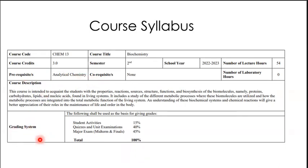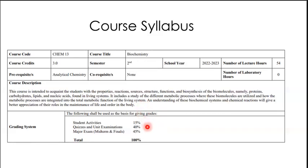For the grading system — this is subject to approval — student activities is only 15%, quizzes and unit examinations 40%, and major exam 45%. This is what we came up with during the first week of the semester after a meeting with the faculty and dean. Quizzes and major exams carry a very big weight because you are in a board course, and they are objectively graded. If you have high grades for your quizzes and major exams, it means you learned a lot from the activities and the lesson itself.